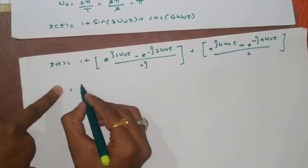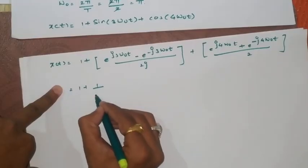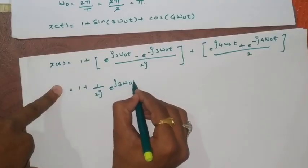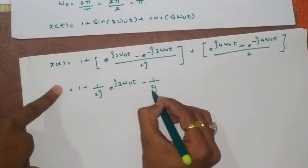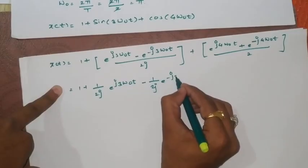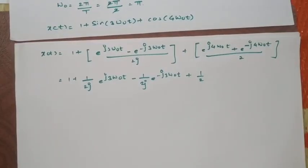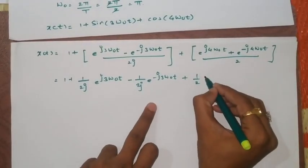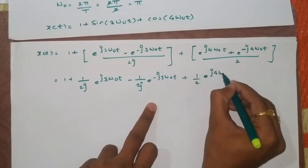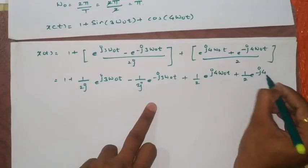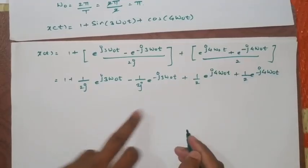Now we will simplify this term so I can write this as 1 plus 1 by 2j e raised to j3ω0t minus 1 by 2j this term as it is plus 1 by 2 e raised to j4ω0t plus 1 by 2 e raised to minus j4ω0t.